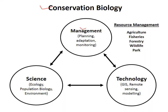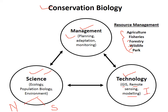Conservation biology is the management of natural resources with the help of science and technology. The natural resources include agriculture, fishery, forest, wildlife, and parks or protected areas. These are managed using two types of science — natural science and social science — along with technology such as GIS (Geographic Information System), remote sensing, modeling, different technical instruments, and different methodologies.